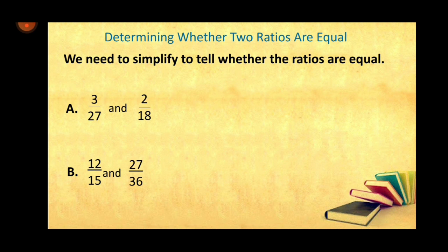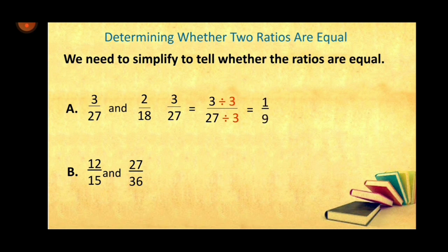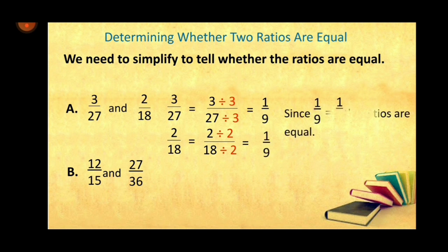Example: 3 over 27 and 2 over 18. We need to simplify first. For 3 over 27, both are divisible by 3, so 3 divided by 3 is 1 and 27 divided by 3 is 9 — answer is 1 over 9. For 2 over 18, both are divisible by 2, so 2 divided by 2 is 1 and 18 divided by 2 is 9 — answer is also 1 over 9. Since 1 over 9 equals 1 over 9, the ratios are equal.